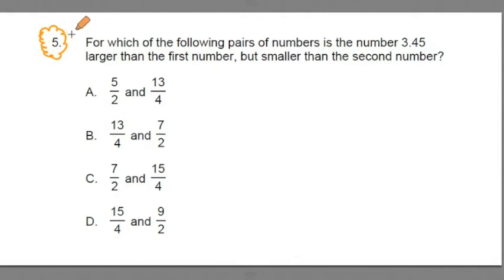We'll start by reading it over, and then we'll go through a strategy on how to solve this. For which of the following pairs of numbers is the number 3.45 larger than the first number, but smaller than the second number?